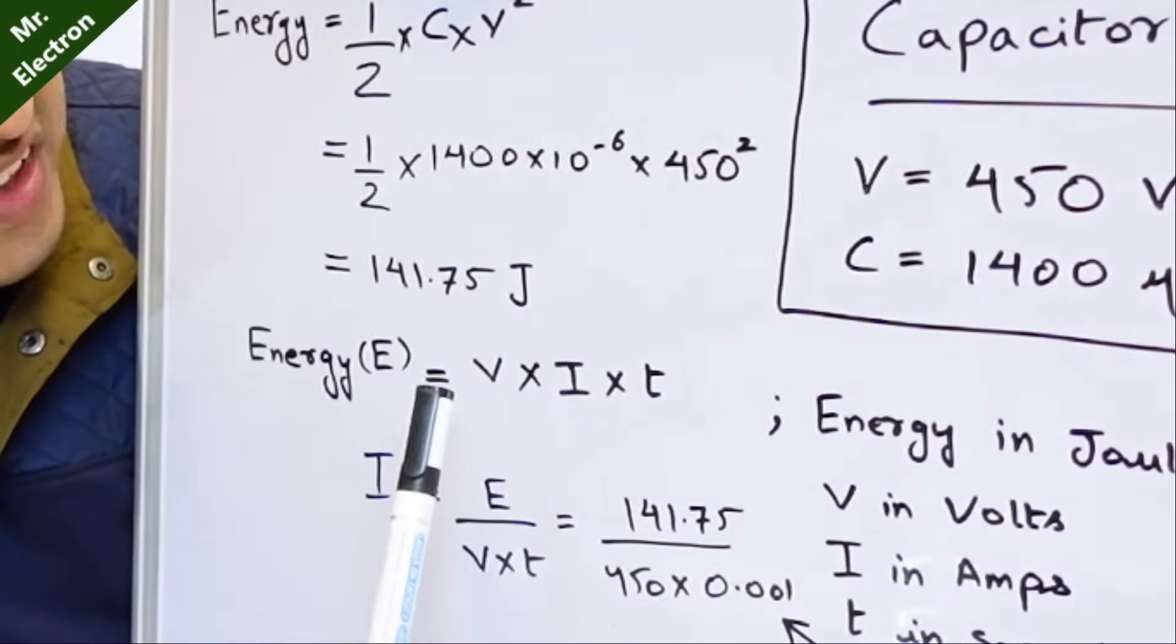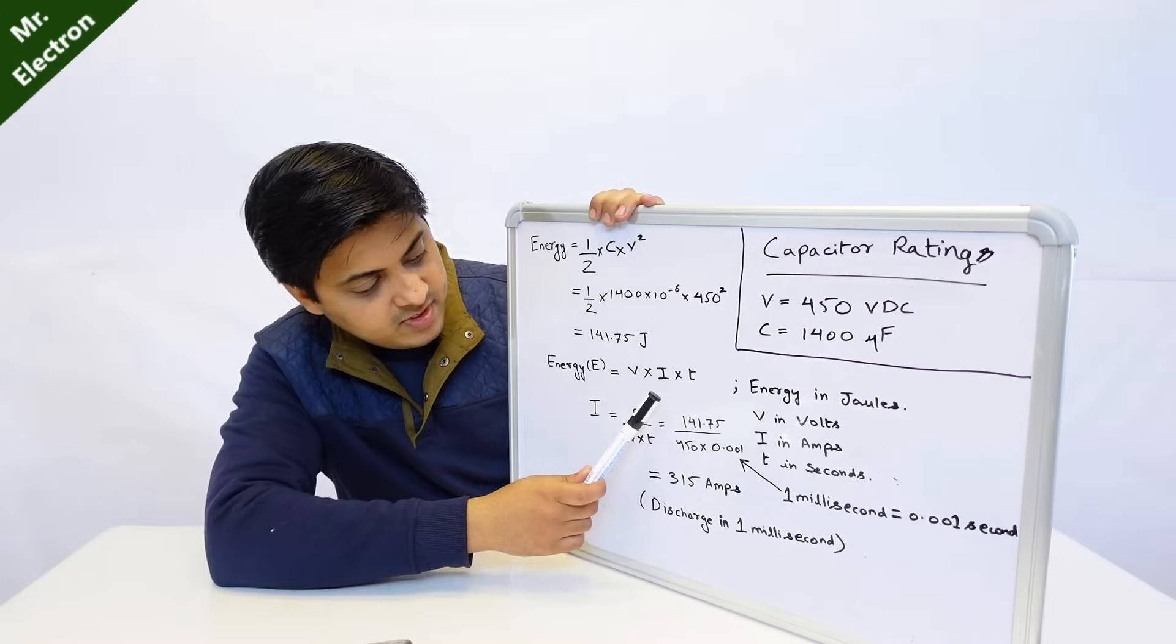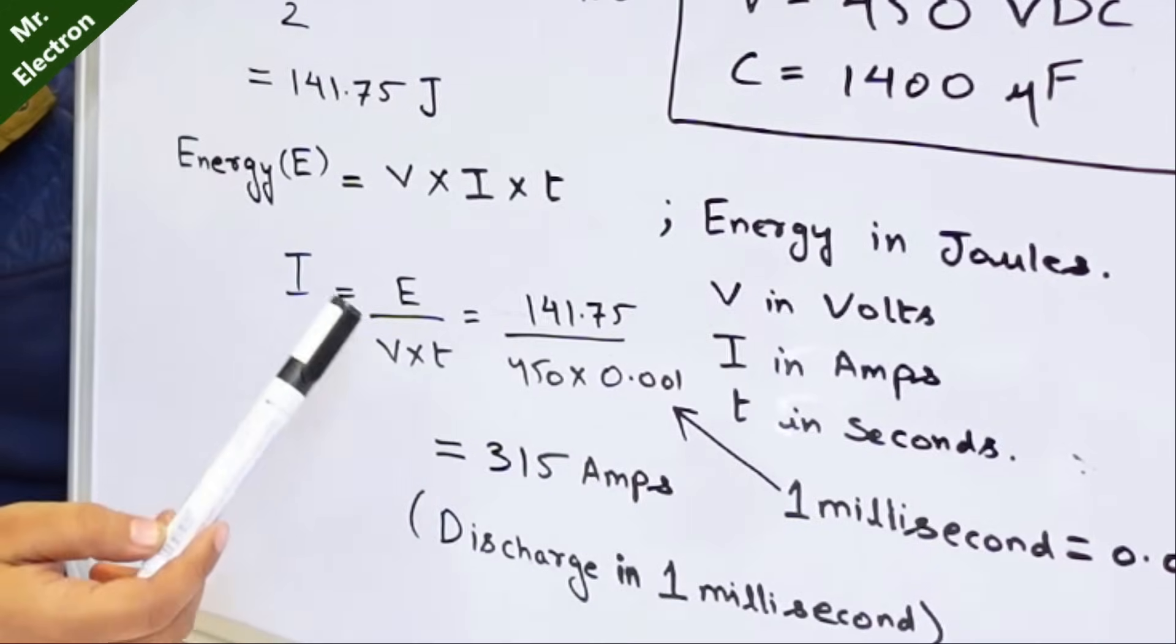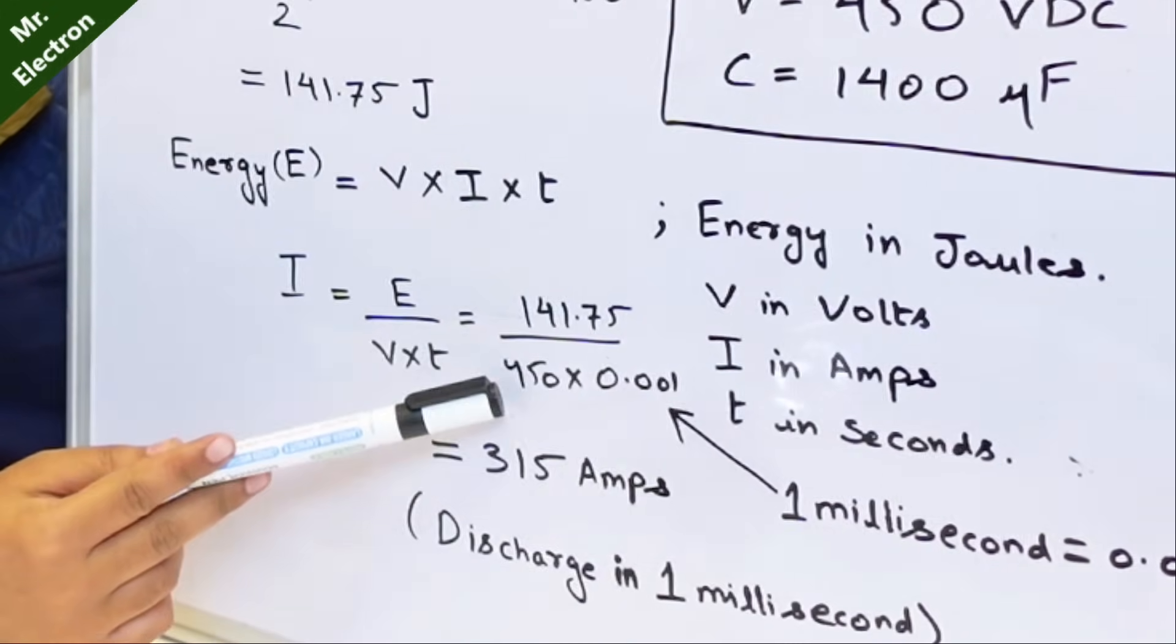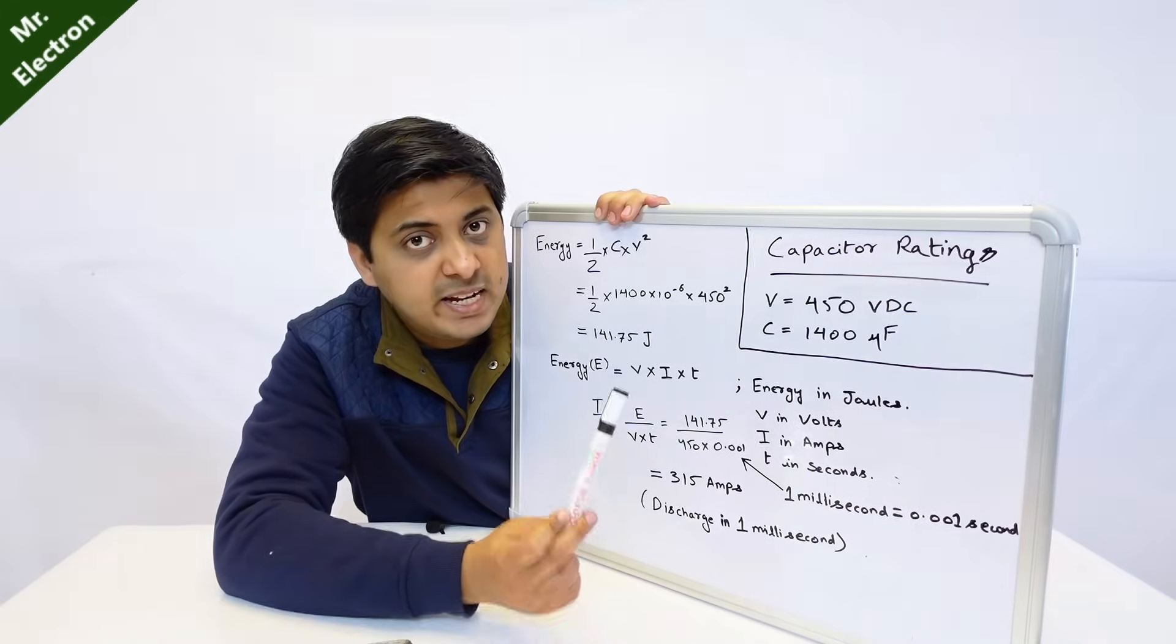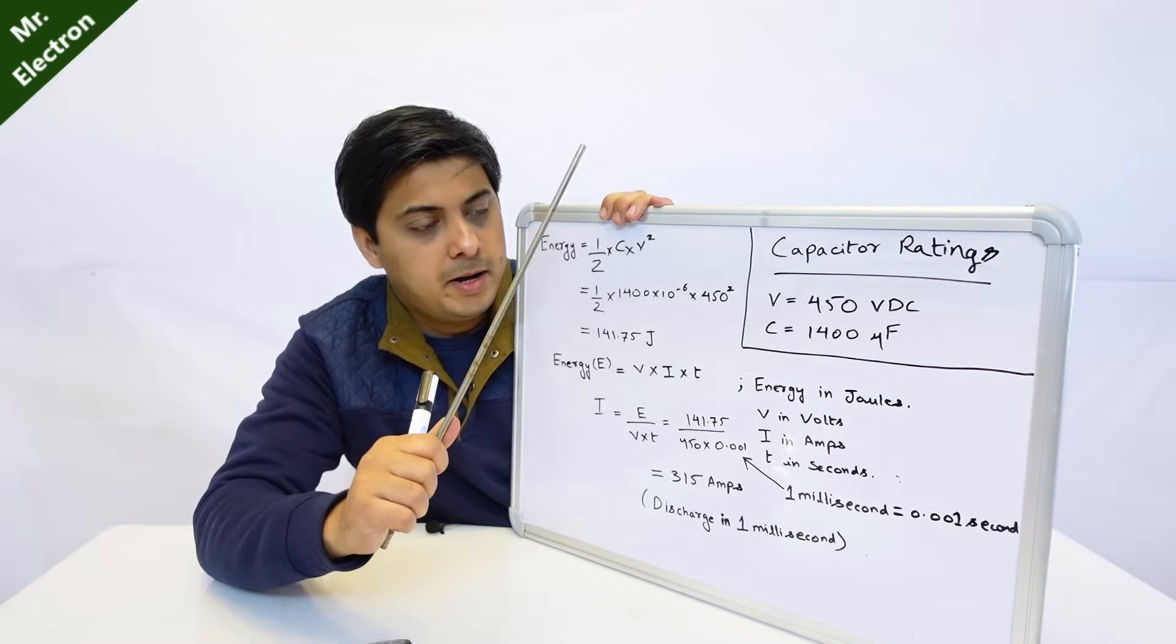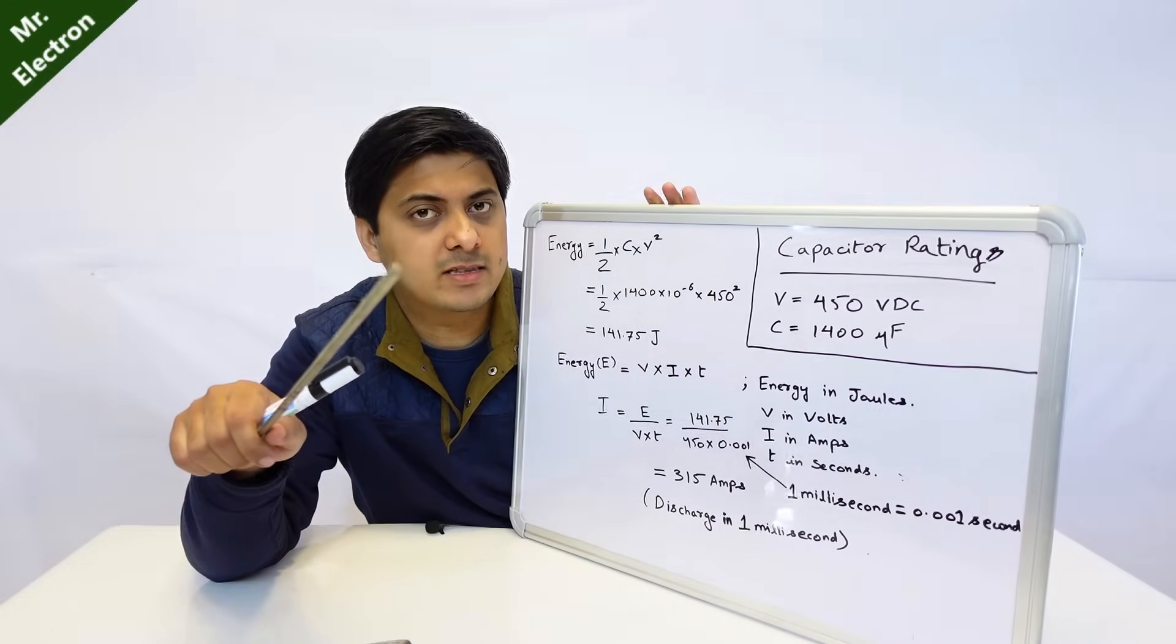The calculation is like this: half into capacitance 1400, which is here 1400 micro 10 to the power of minus 6, and V square, it is 450, so 450 square. You do the calculation. For me it turns out to be 141.75 joules. Energy is also denoted by VIT, voltage into current into time. VIS is for power.